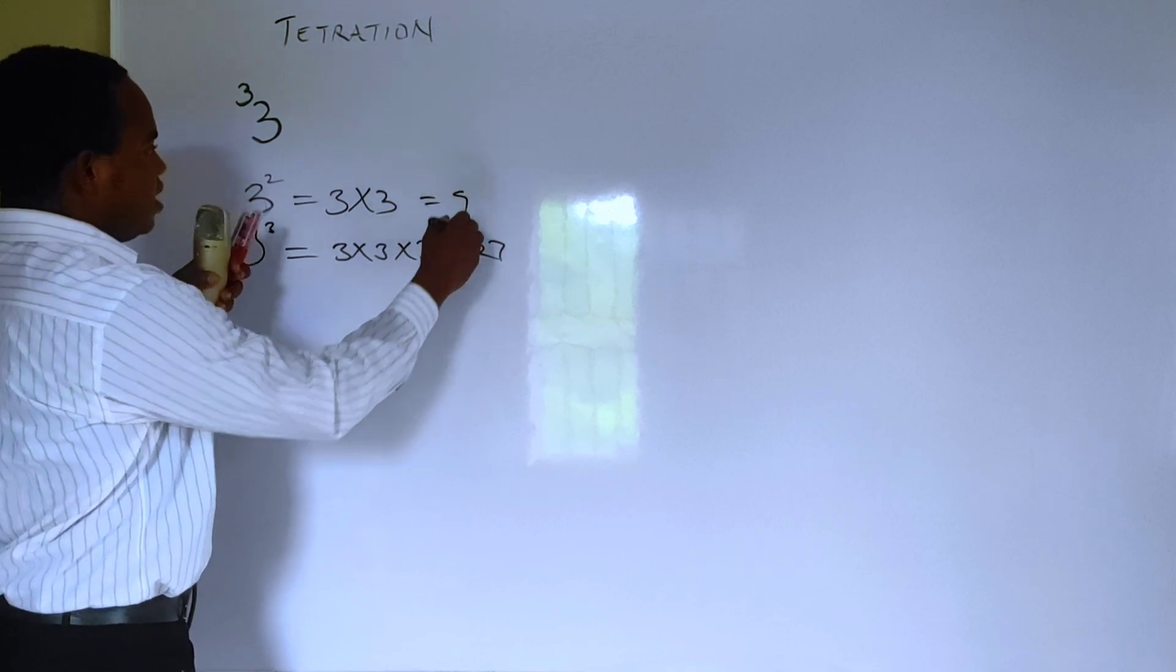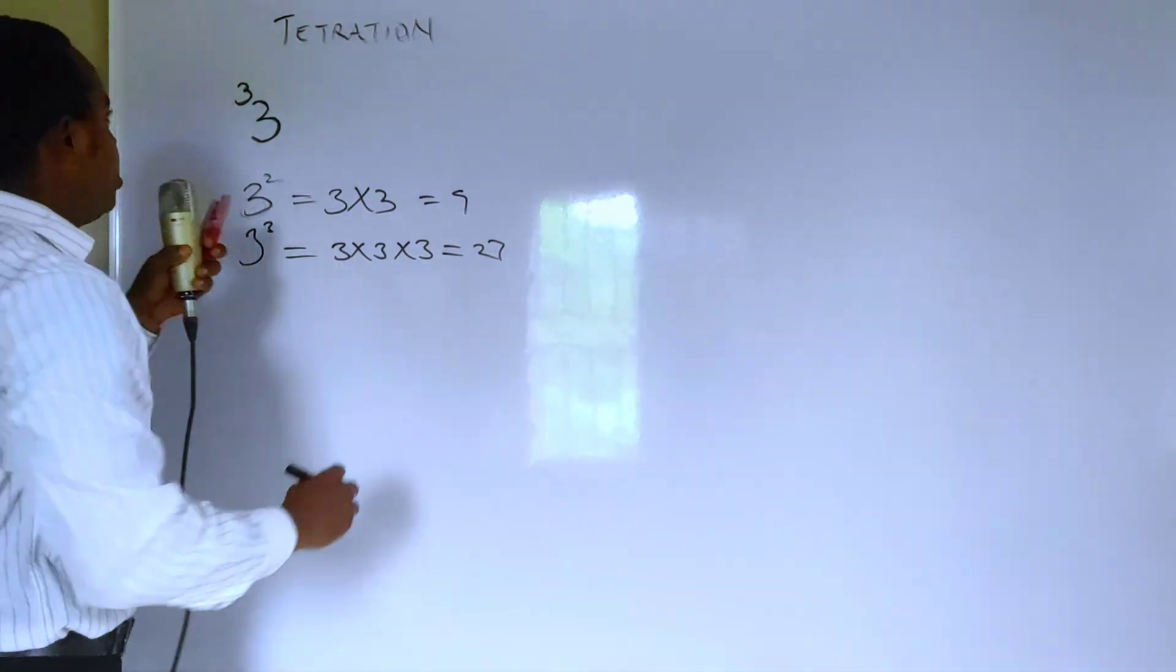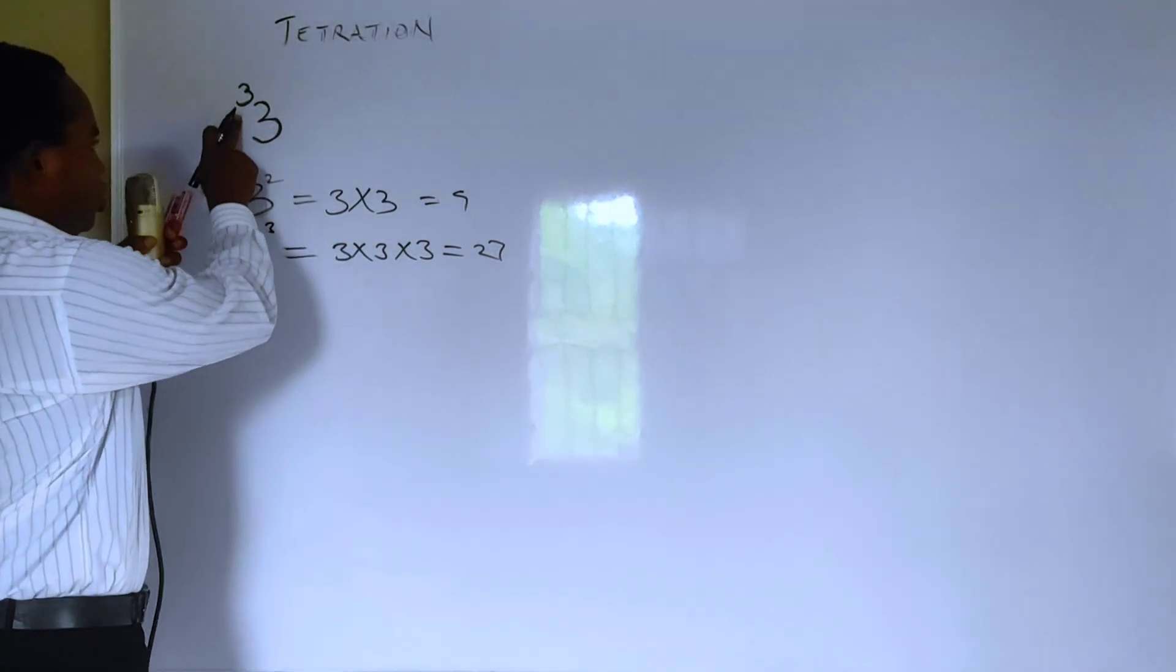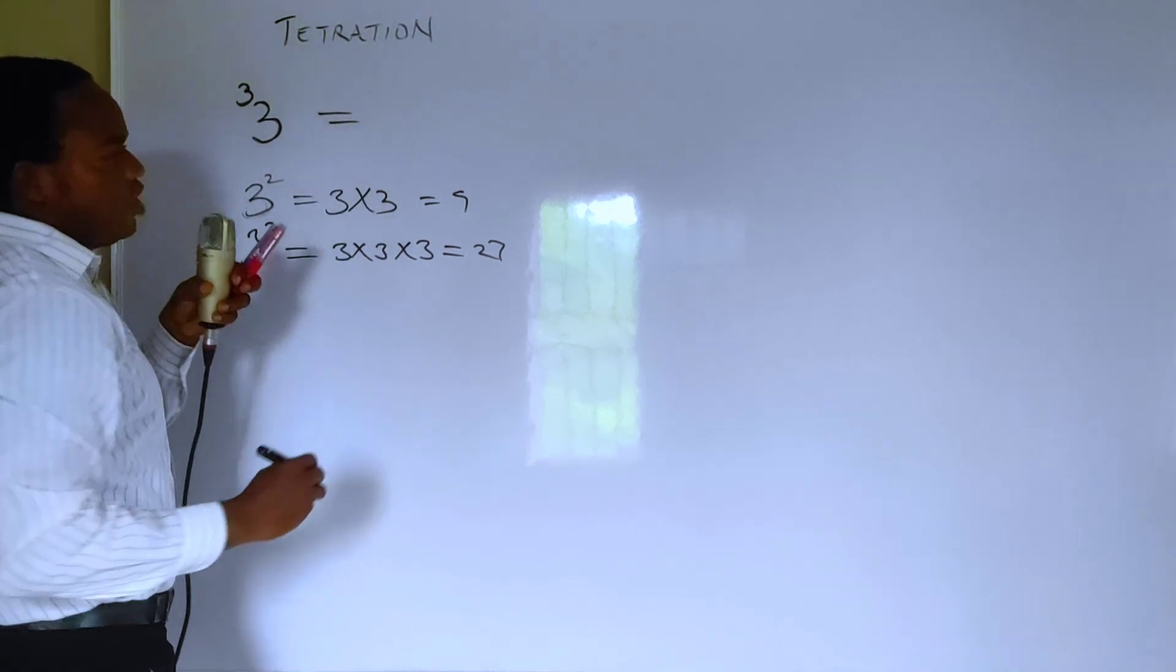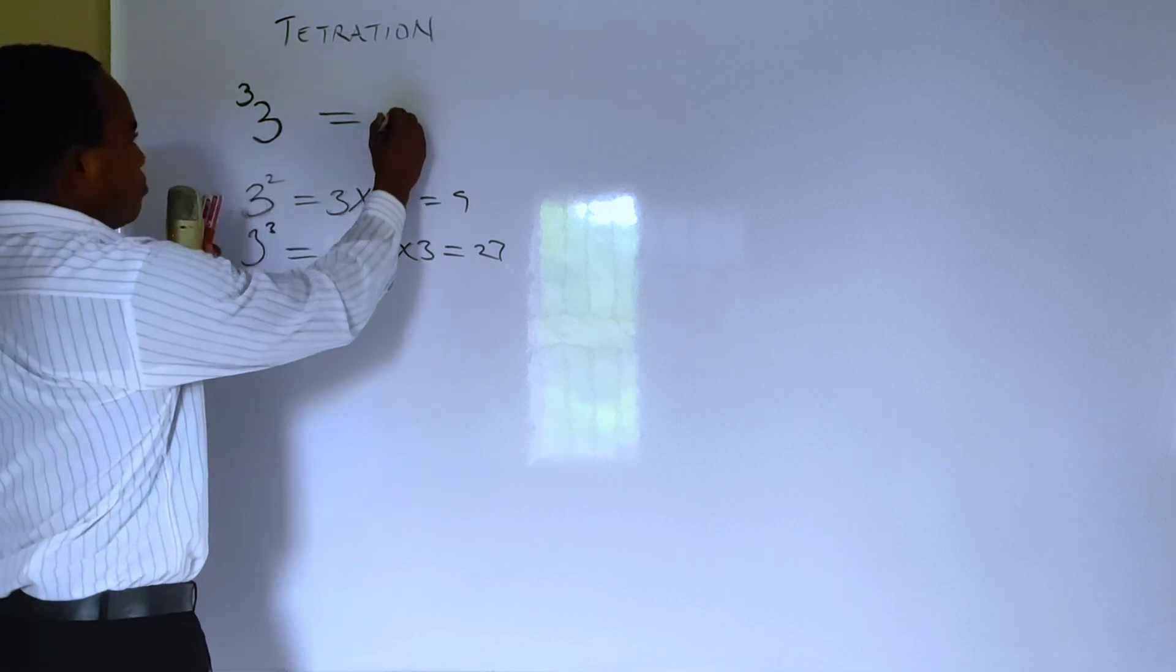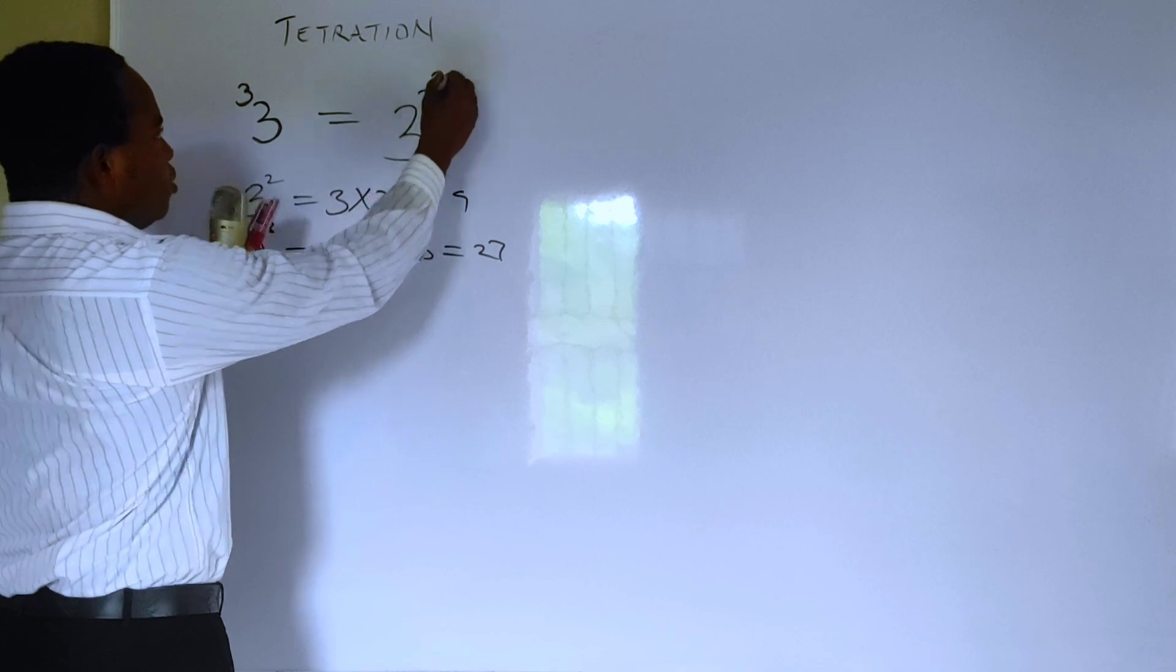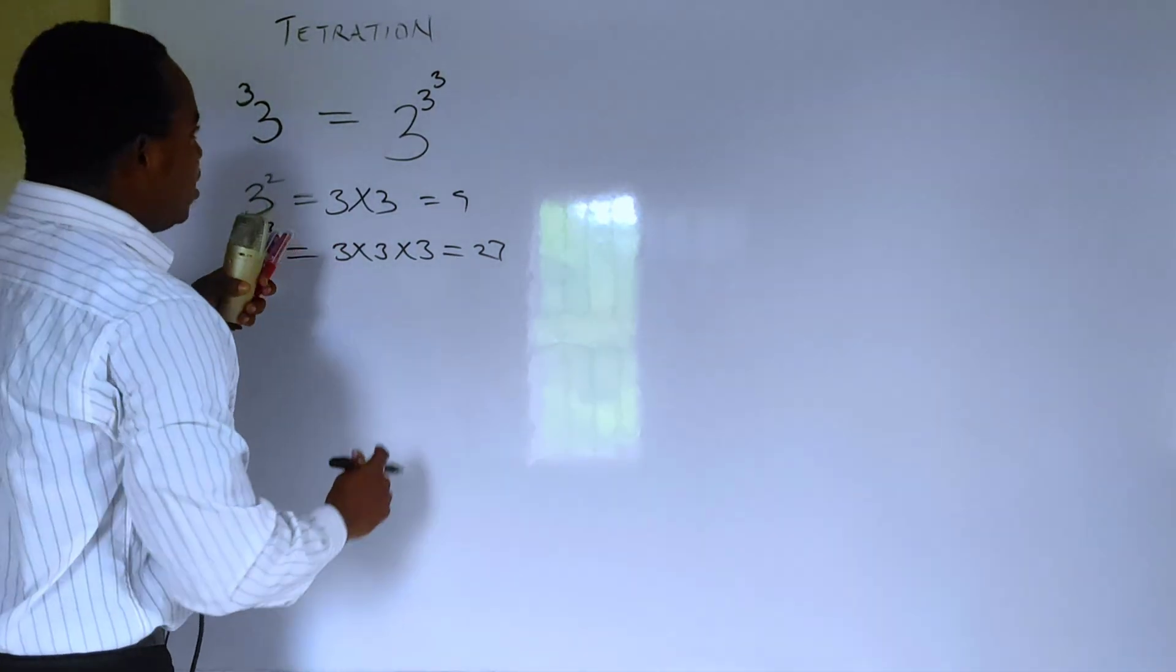Well, what is this? You pronounce this as the third tetration of 3. This is going to be equal to 3 raised to the power of 3 to the third power. And how do you evaluate this?